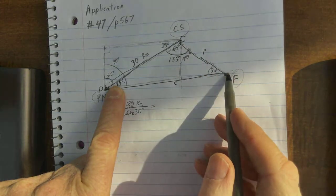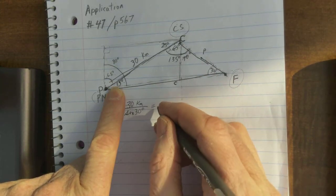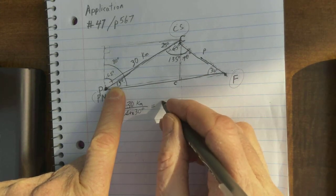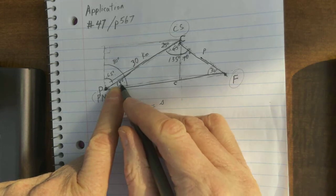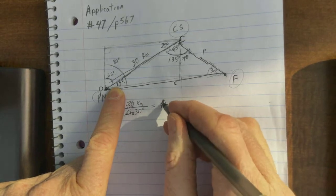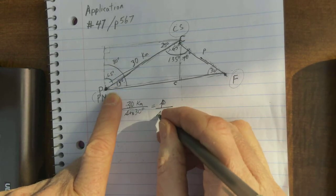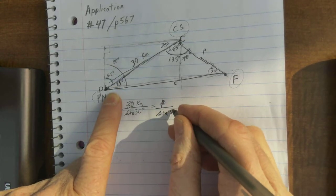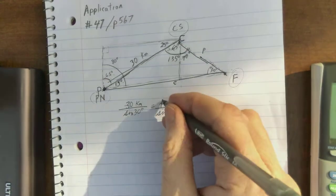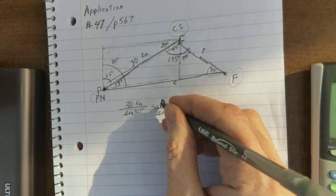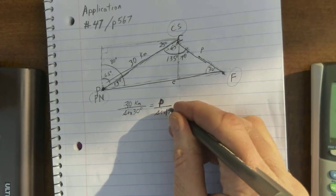let's figure out from the Colt Station to the fire, let's do p over the sine of 15 degrees.